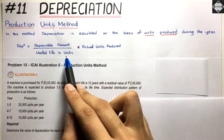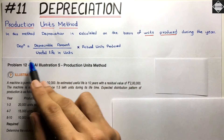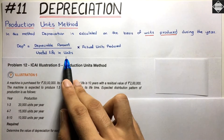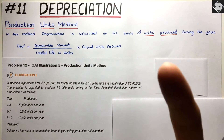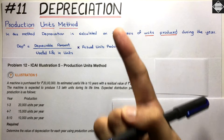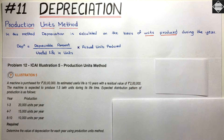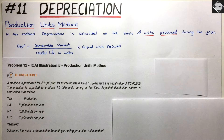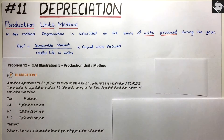In the denominator you take how many units the machine can produce in its entire life. Dividing depreciable amount by useful life in units gives you the depreciation per unit produced by that machine. Then you multiply that by the actual units produced in the current year.